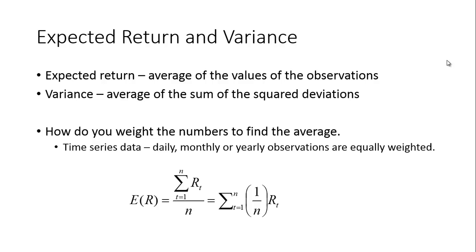When you're calculating expected return, what you're calculating is an average of the values of the observations, so it's what you expect or what you think the average is. The variance on the other hand is the average of the sum of the square deviations.